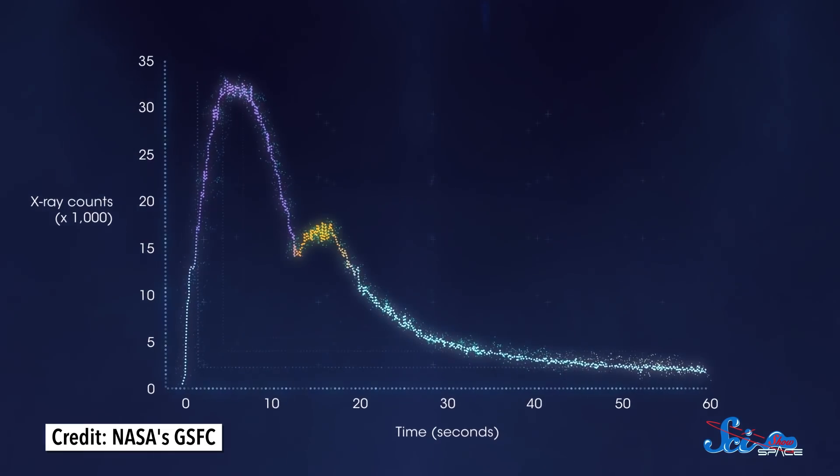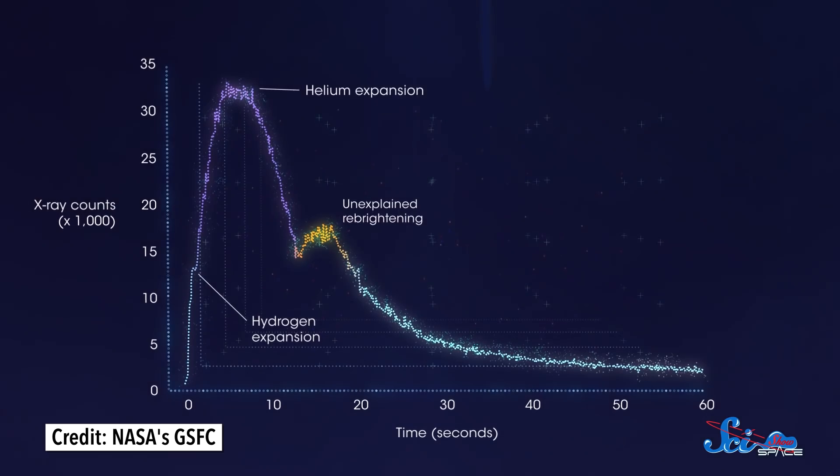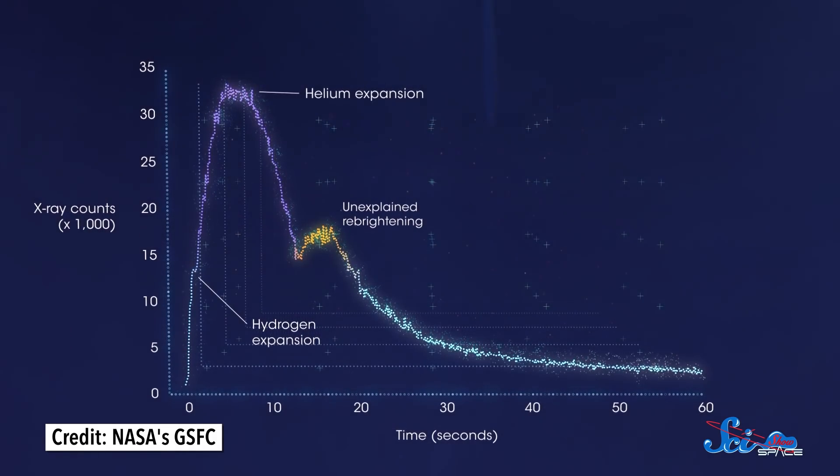Typically, these bursts get brighter, hit a peak, and then fade away. But this last burst from J1808 didn't do that. Instead, about half a second after its flare started, the amount of X-rays it released suddenly stopped increasing. For about a second, the flare stalled. And then it continued on and reached maximum intensity.